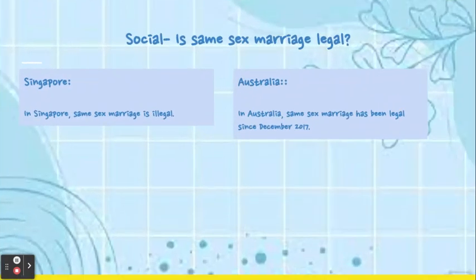Same-sex marriage has been legal in Australia since December 2017. The reason why same-sex marriage is legal is because Australians voted in favour of gender marriage equality. In Singapore, same-sex marriage has always been illegal. The law was made by British people in the British colonial era.